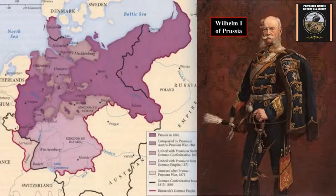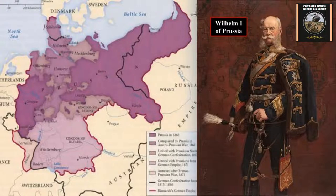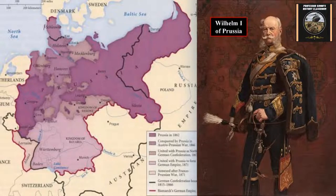Wilhelm I was the Hohenzollern ruler of Prussia. Most of Prussia was in the northern part of what is Germany today, and also part of East Prussia, which is now part of Poland. The southern German areas would eventually unite with it to create the German Empire that would form later.